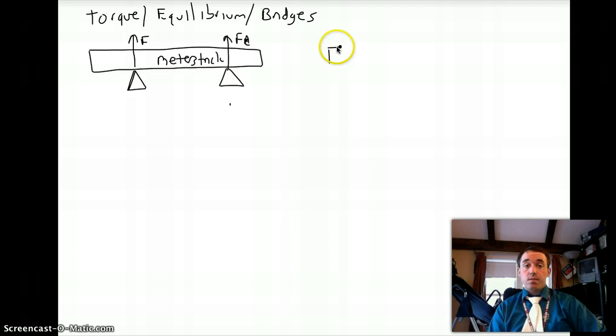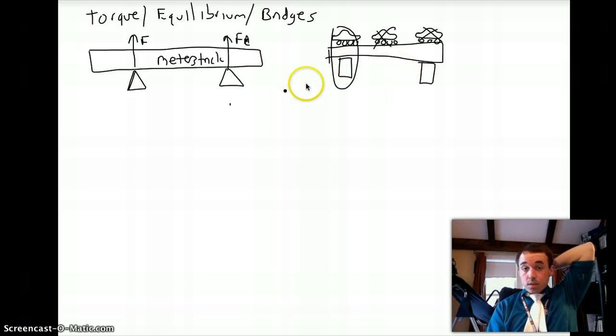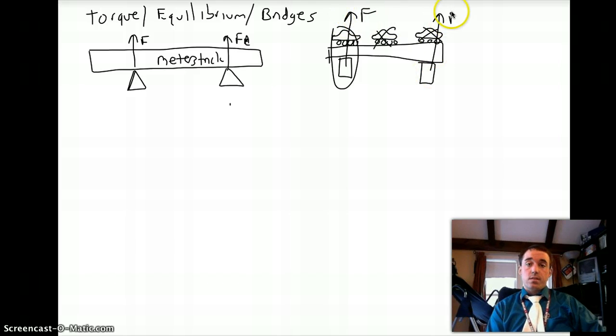Especially if a car is right on top of a support. If a car is right above this support, it needs to basically hold the entire weight of the car, and this support doesn't have to hold any. But when the car is here, it's going to be kind of evenly supported. But what happens when there's multiple cars? So the notes today are going to be a sample problem of showing how these supports and how torque is used to determine what the required force is for each of these supports, depending on where a single payload is located on a bridge.